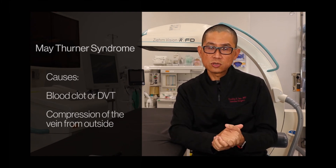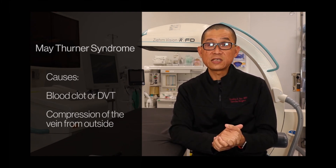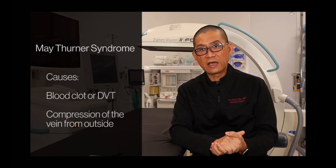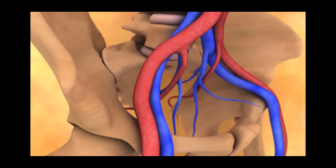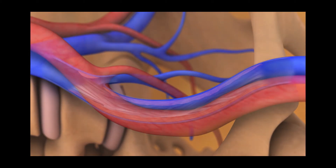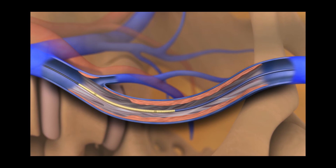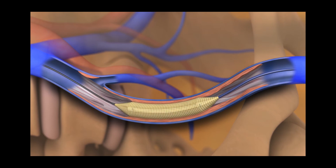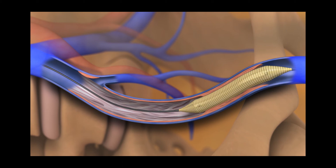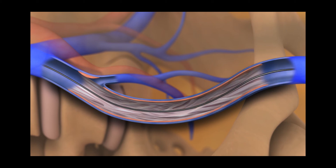The primary way to treat May-Thurner syndrome is the placement of a stent inside the vein. Endovascular therapy is the primary method to treat May-Thurner syndrome. This is accomplished by insertion of small catheters and wires inside the vein. Guidance is performed using x-rays and ultrasound. Once the blockage is identified and measured, the blockage is dilated open by inflating a balloon, which is called angioplasty.